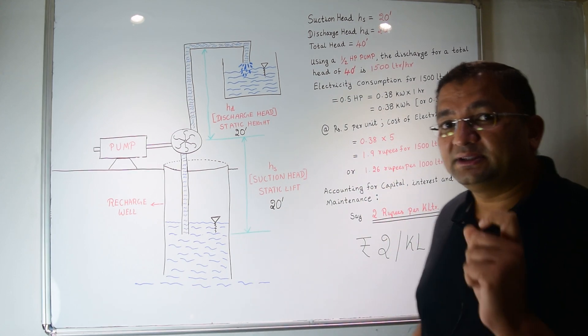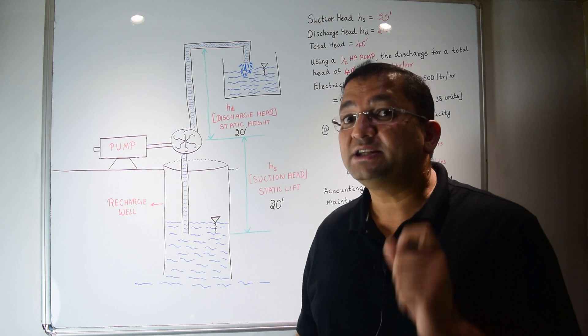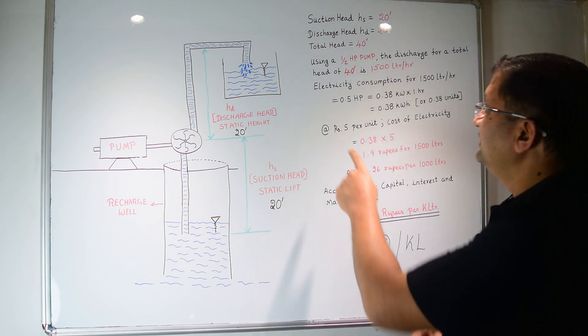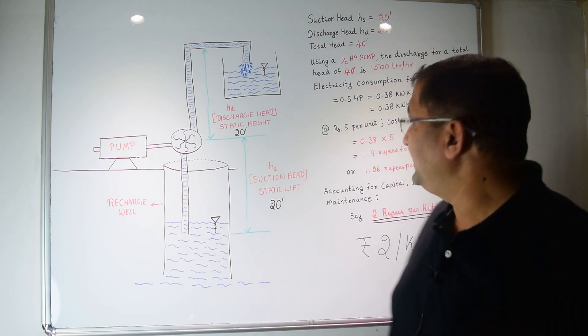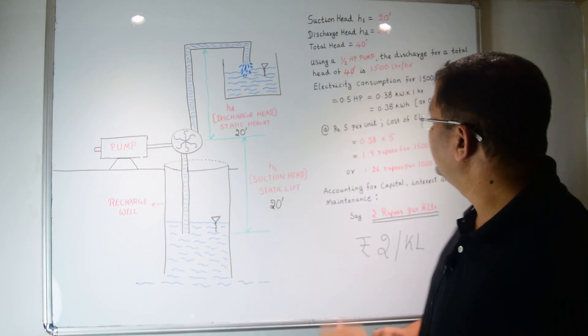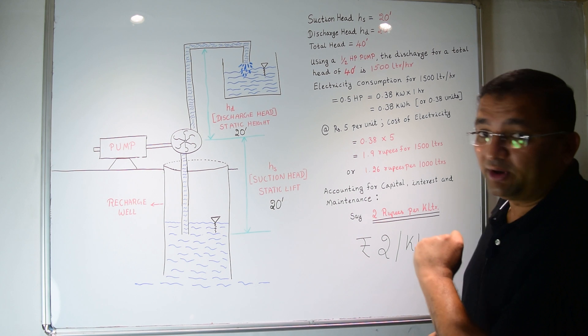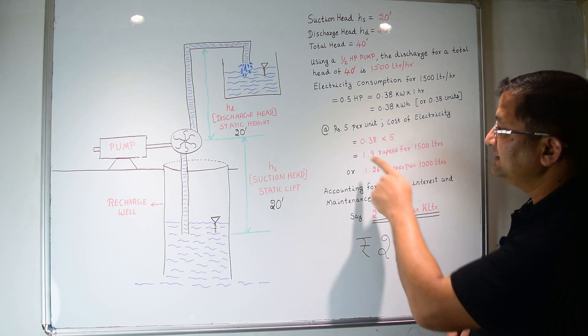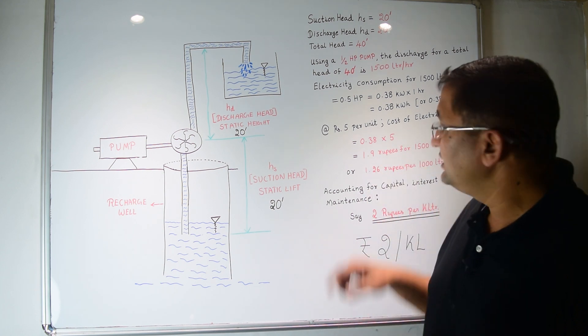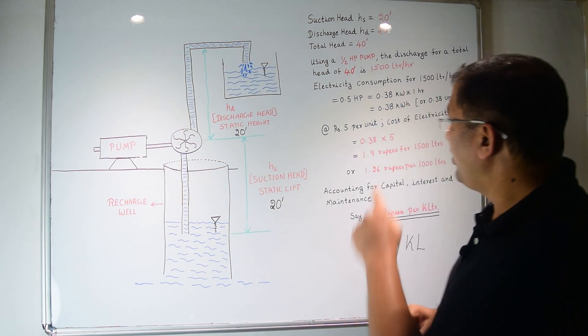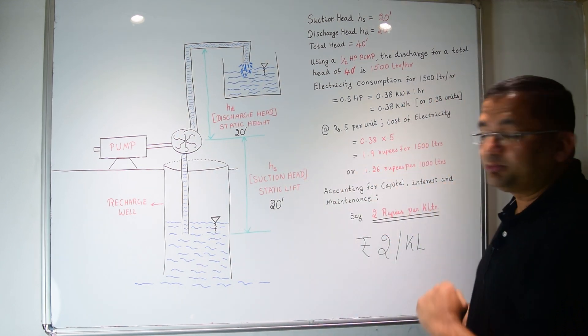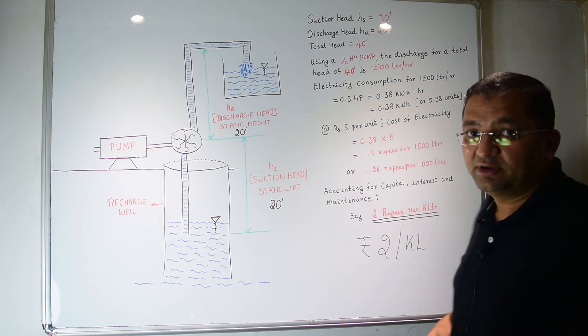So the electricity consumed by this pump is 0.38 into one hour, that is 0.38 kWh or 0.38 units. Now assuming that the cost of electricity is rupees 5 per unit, the amount spent for delivering this water is 0.38 kWh into rupees 5, that is 1.9 rupees to deliver 1500 liters of water or 1.26 rupees for 1000 liters of water.